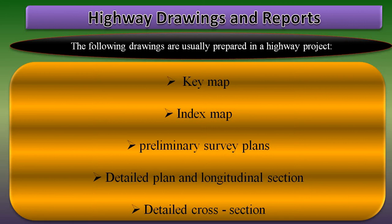The second one is the index map. The index map generally shows the topography of the area. The details are symbolically represented.